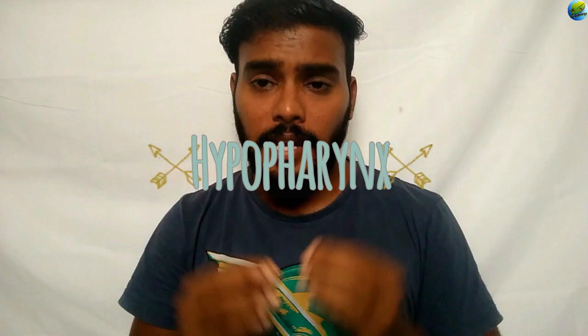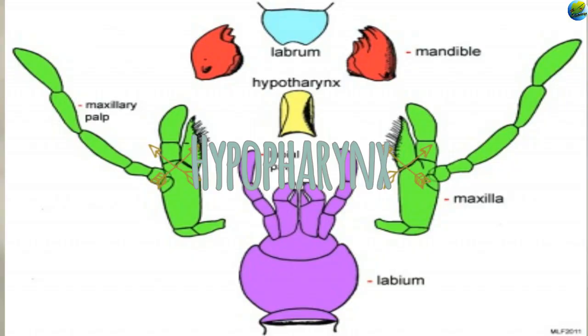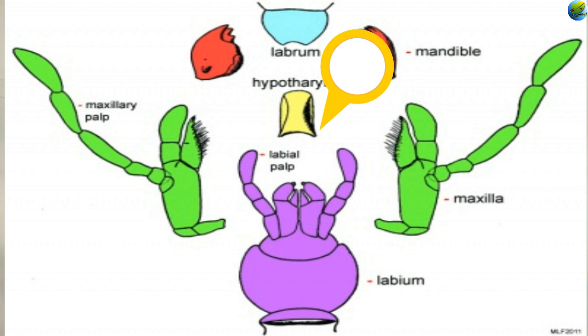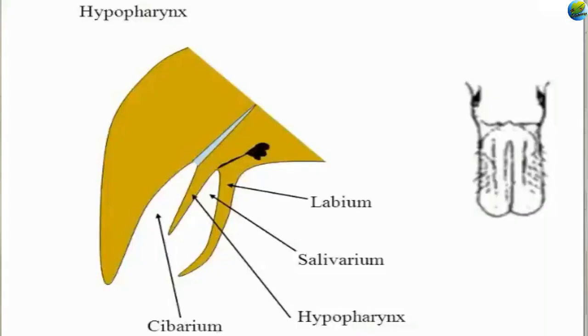The next mouth part is the hypopharynx — a small tongue-like structure found between the maxillae and just above the labium. The salivary gland, which produces saliva to facilitate initial digestion of food, secretes mostly just below the hypopharynx. The area between the labrum and the hypopharynx is called the cibarium. The area between the labium and the hypopharynx is known as the salivarium, where the salivary glands open.